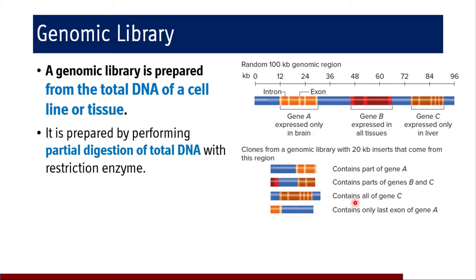A random 100 kilobases per genomic region is subjected to different restriction enzymes and partially digested, giving us a set of cloned cells with particular gene sequences of interest. Clones from a genomic library with 20 kilobases per insert may contain a part of gene A; a second set may contain parts of genes B and C; a third may contain all of gene C and only exons of gene A. We can therefore have a variety of sequences in our cloned cells.